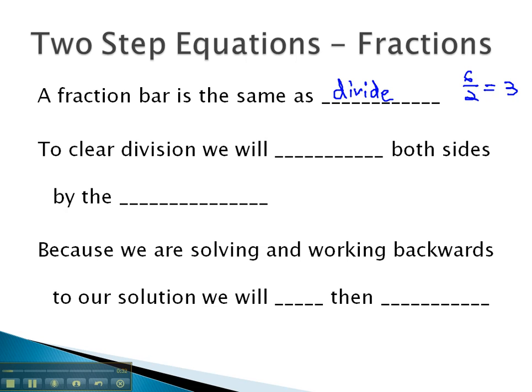And so, based on what we've seen with solving equations, to clear division, we must do the opposite or we must multiply both sides by the number or the denominator. And because we're solving or working backwards to our solution, we're going to also do the same thing and add and then multiply order of operations working backwards. The addition and subtraction step, then the multiplication and division step.